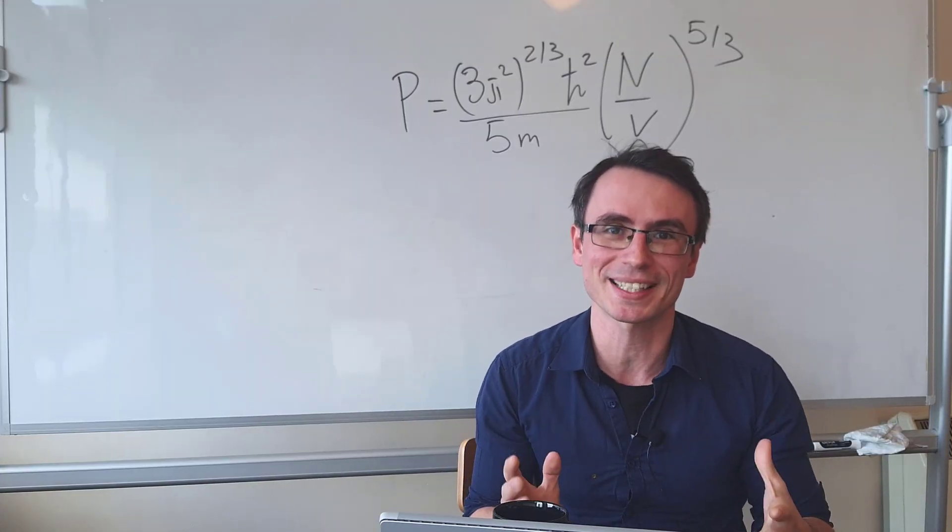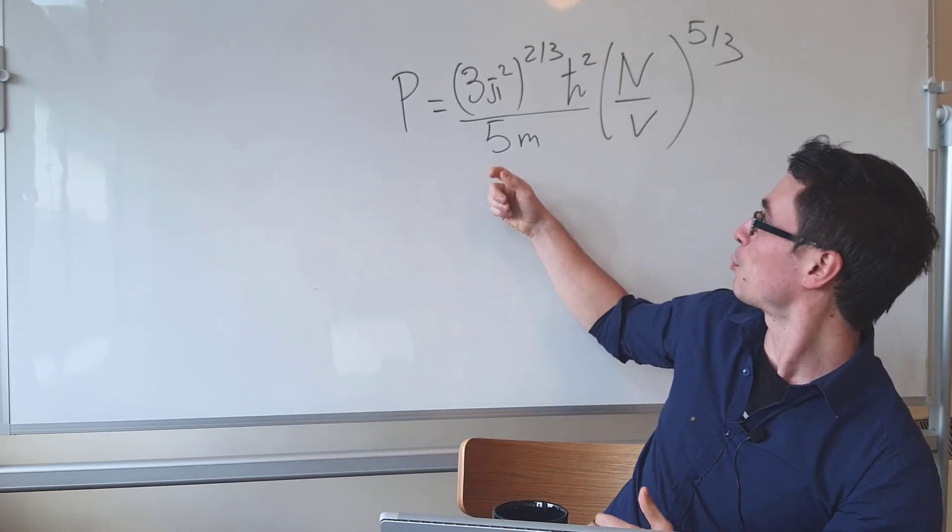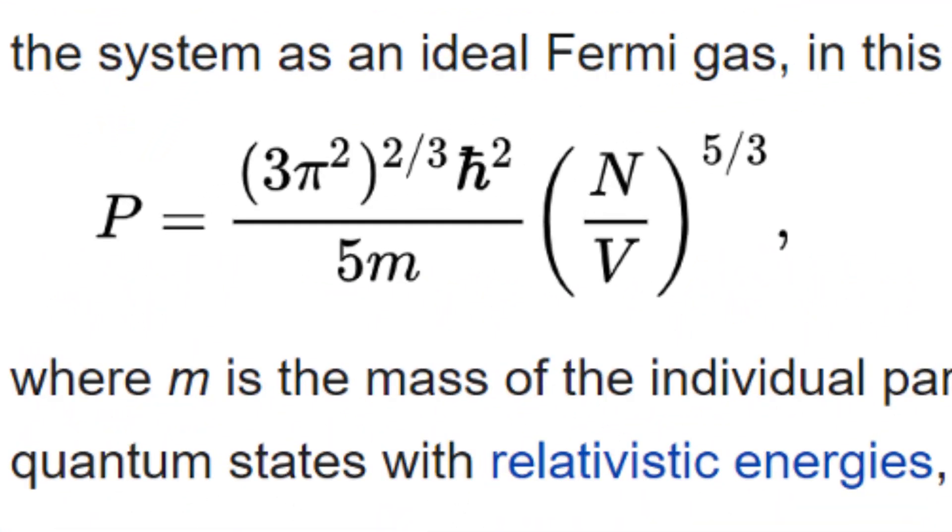In fact, if we were to approximate the matter inside of a neutron star by an ideal Fermi gas, the pressure will be given by this expression. And notice that this term, n over v, the number of particles per unit volume, will be the dominant term.